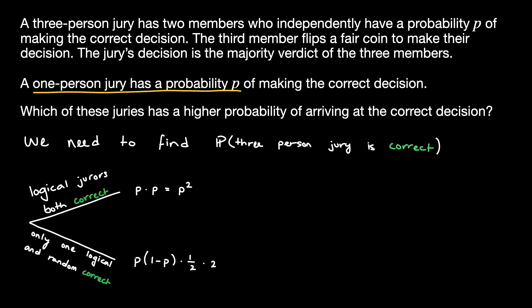Finally, we multiply this by 2, since there are two ways that this outcome could happen, as both of the logical jurors could swap places between being correct and incorrect. Simplifying this, we get the probability as P times 1-P.